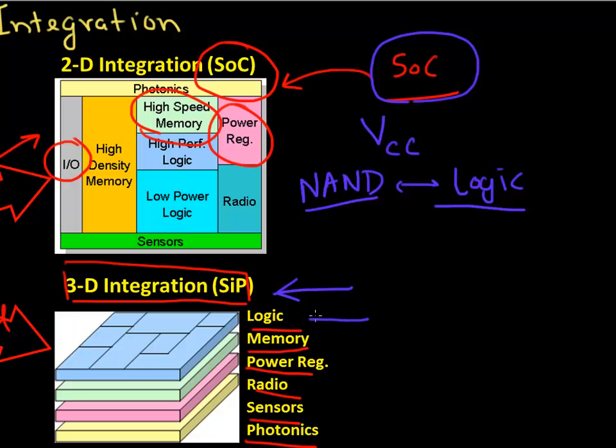You use a process flow which is optimized for logic. You use a process flow which is optimized for NAND. Some of these chips which are analog chips or MEMS chips could be in fact even made on a 200mm or a 150mm fab. So you use what works best for making each of these chips and then you finally bring them together and integrate them on top of each other or sideways to each other using this 3D or 2.5D approach.